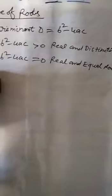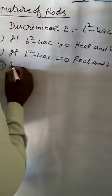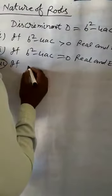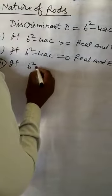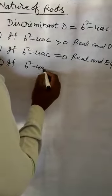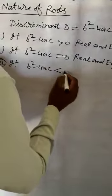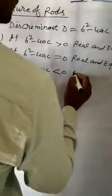Third: if B square minus 4AC less than 0, there are no real roots.